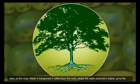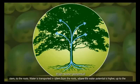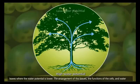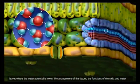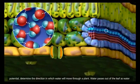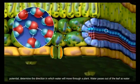Water is transported in xylem from the roots, where the water potential is higher, up to the leaves, where the water potential is lower. The arrangement of the tissues, the functions of the cells, and water potential determine the direction in which water will move through a plant.